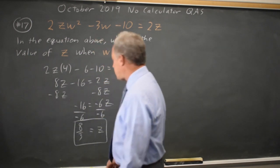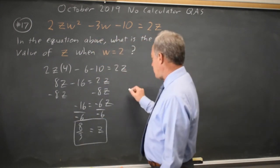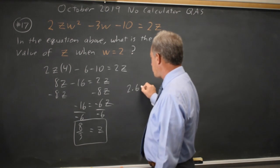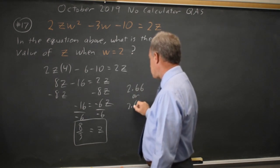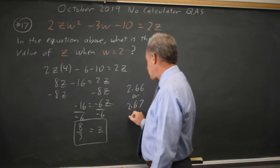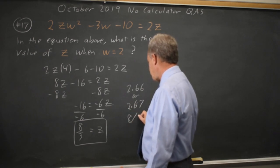I could grid that in as a decimal, that is 2.6 repeating, so that's 2.66 or 2.67, or I can grid that in as 8 divided by 3.